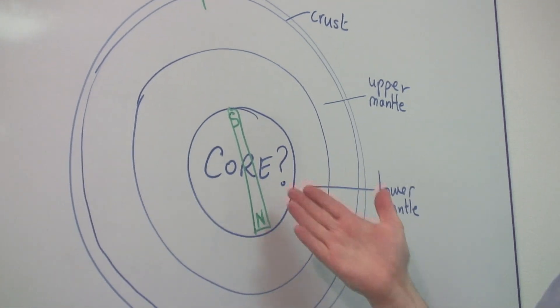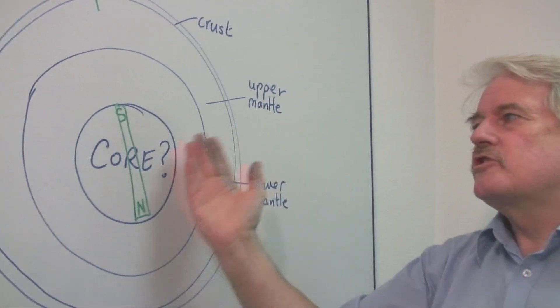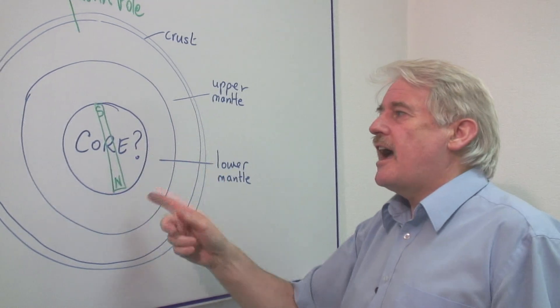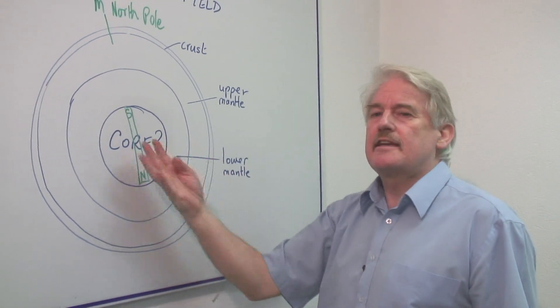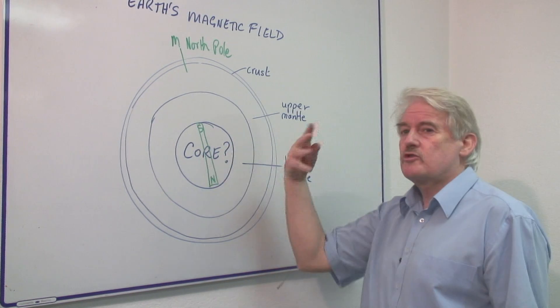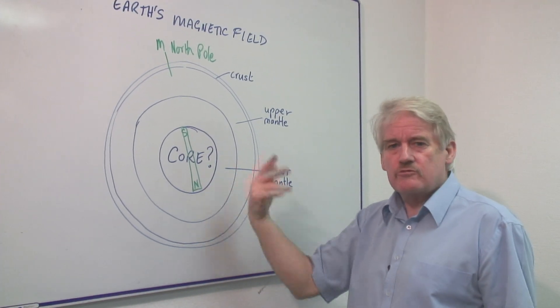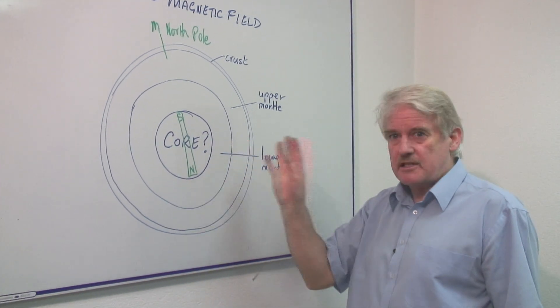There is some kind of, not physically a magnet, but there is something that produces a property as if there were a bar magnet in the center of the Earth. There isn't. It's just rotating, fast rotating liquid material, we believe.